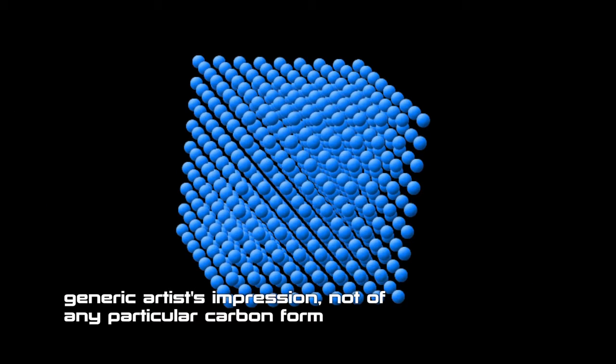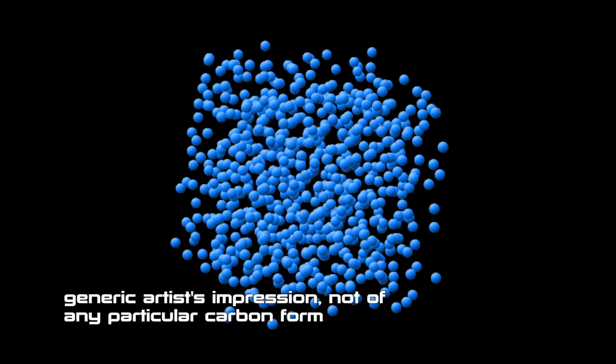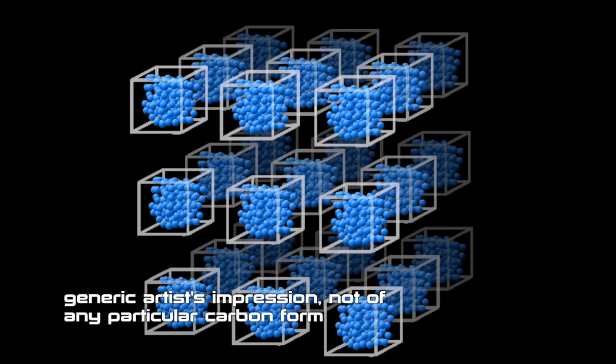Some forms of carbon are crystalline, meaning that the structure is organized in repeating atomic units. Other forms are amorphous, meaning that the structure lacks the long-range order of crystals. Hybrid products that combine both crystalline and amorphous elements had not previously been observed, although scientists believed they could be created.